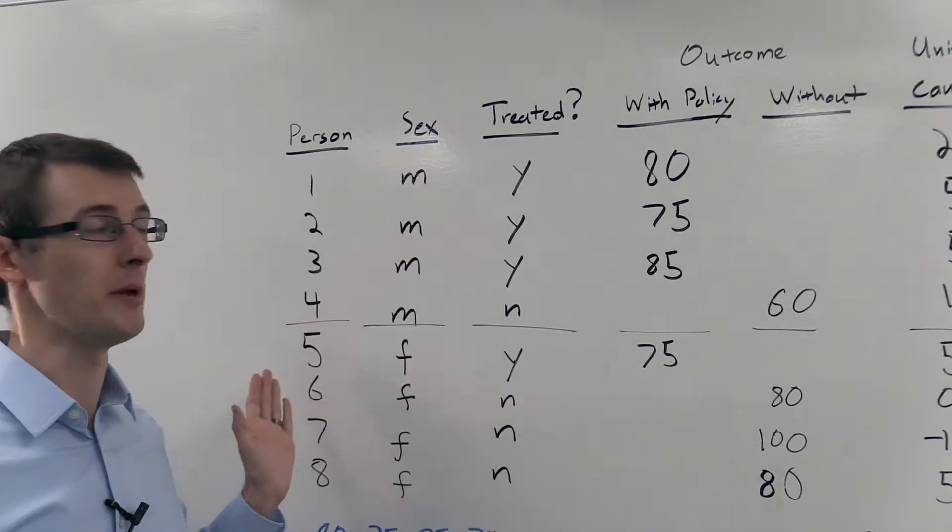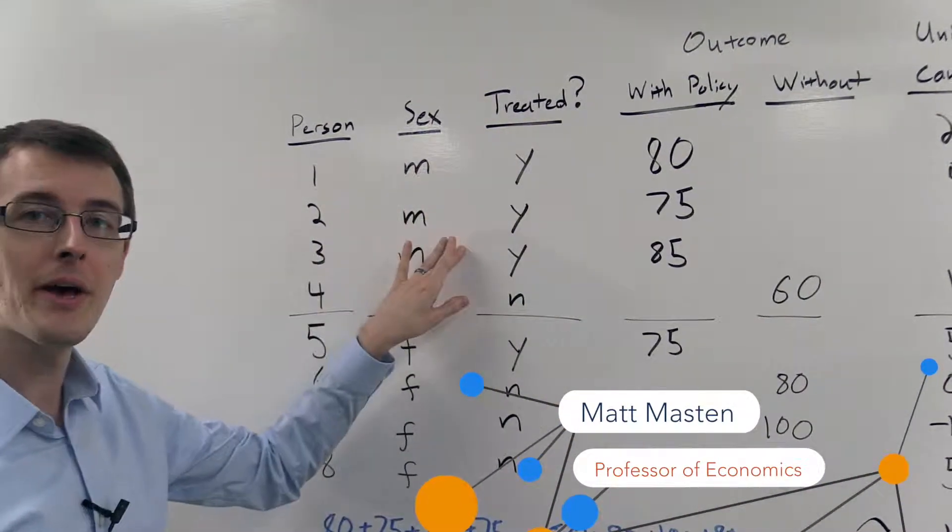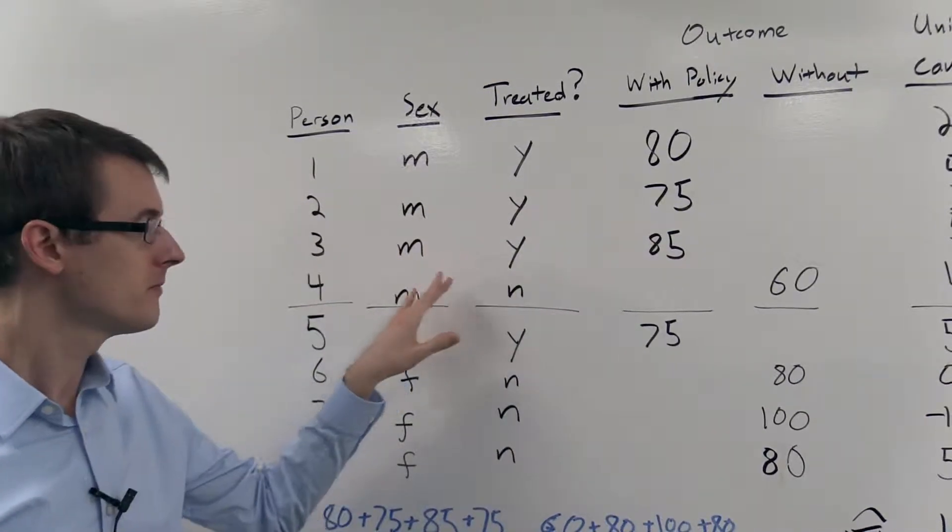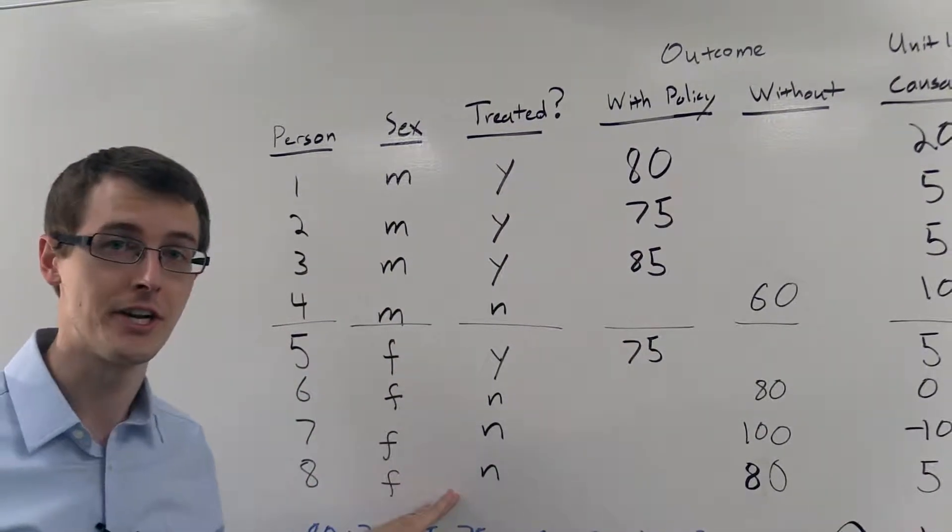In this data set, I've got eight people: four men and four women. The first three men are all treated. The last guy, he's not treated. The first woman, she's treated, and the other three, they're not treated.